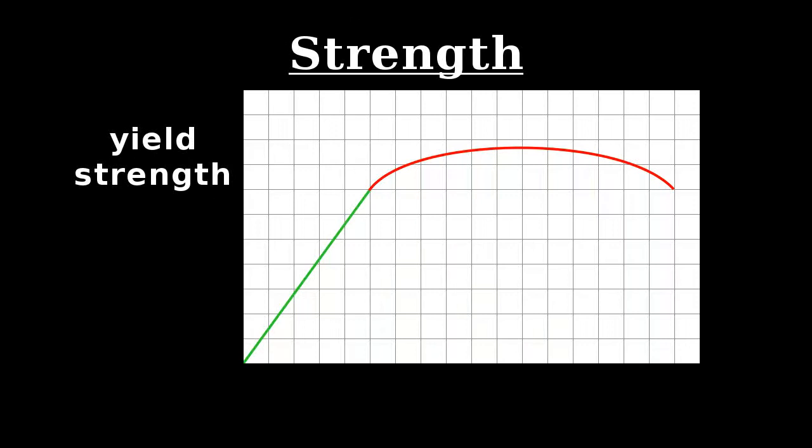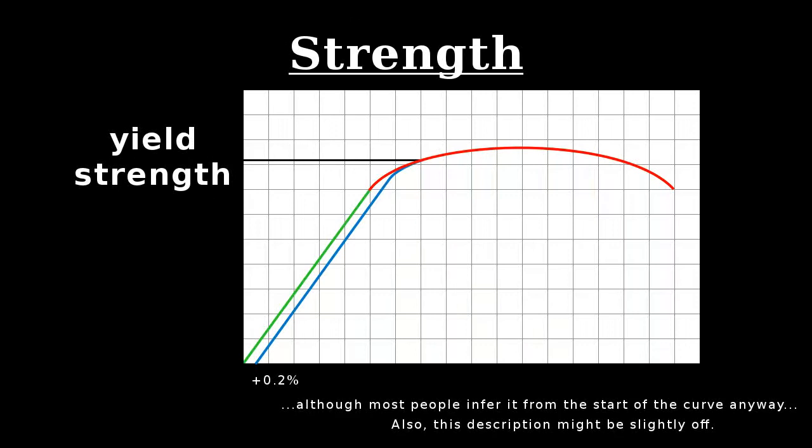So more often yield strength is used. This is the point at which a small amount of permanent strain, usually 0.2%, will be left after the elastic strain is released. This is a useful measurement because stresses below the yield strength will typically cause no damage to a piece of that material.